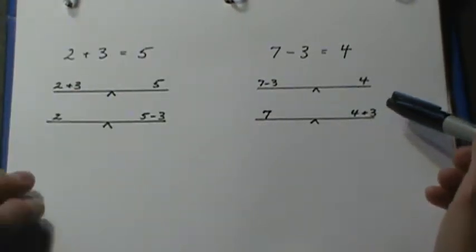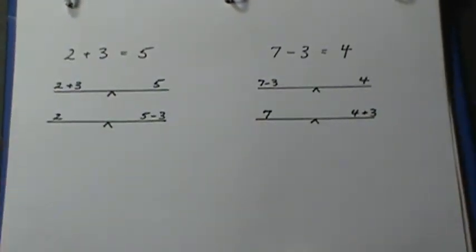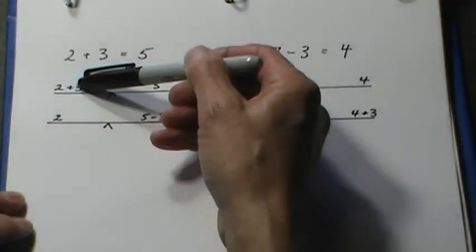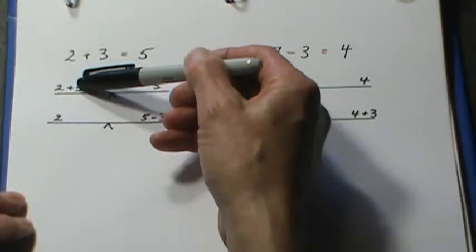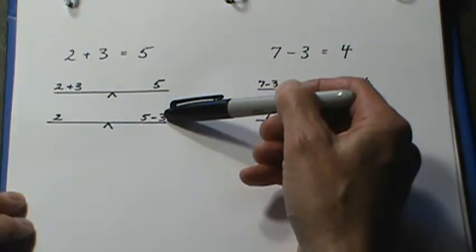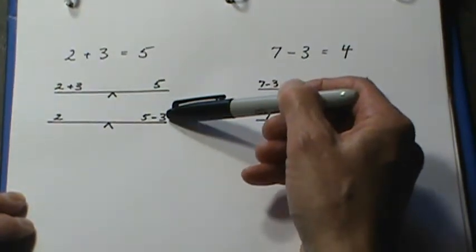Now that leads to a shortcut. And the shortcut basically is that if you have a term on one side of the equation, you can write it on the other side of the equation as long as you use the opposite sign.